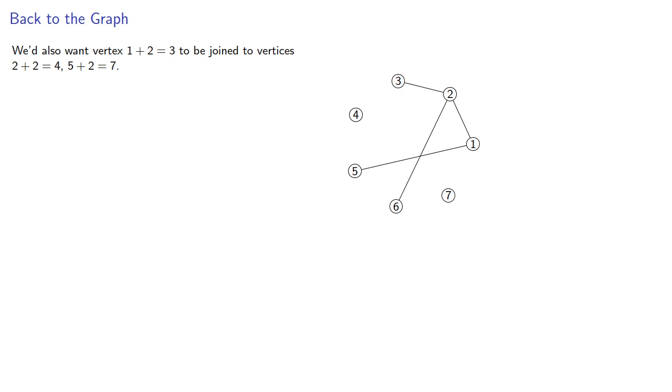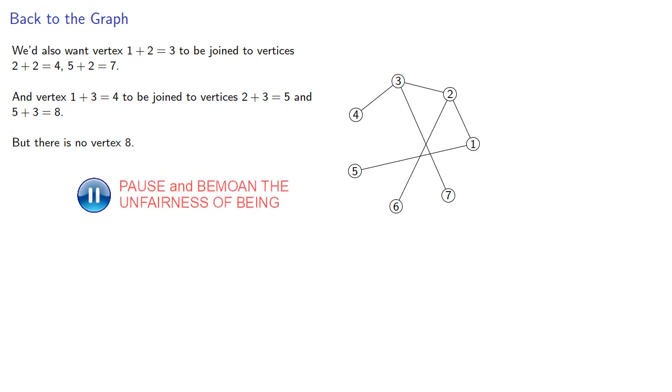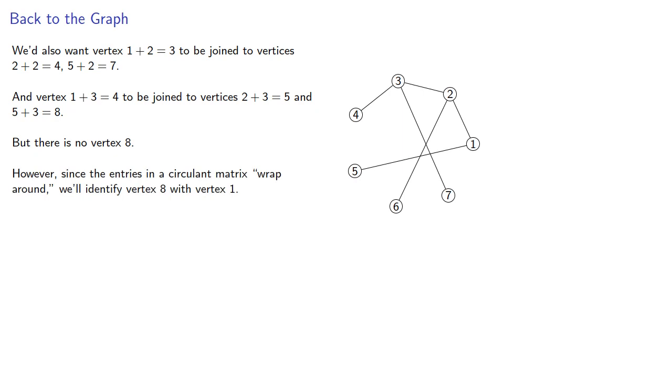And we'd also want vertex 1 plus 2, which is 3, to be joined to vertices 2 plus 2, which is 4, and 5 plus 2, which is 7. But there is no vertex 8. However, since the entries in a circulant matrix wrap around, we'll identify vertex 8 with vertex 1.